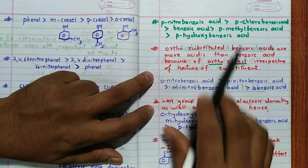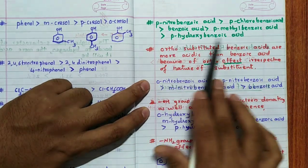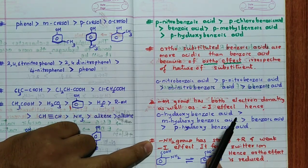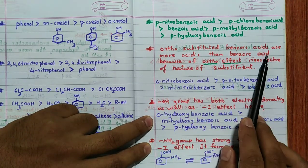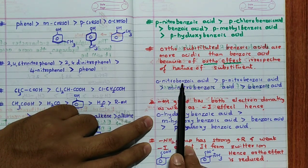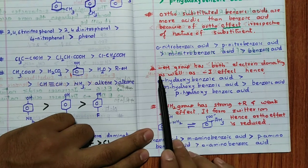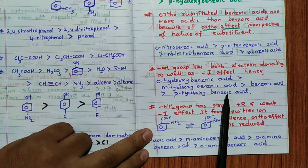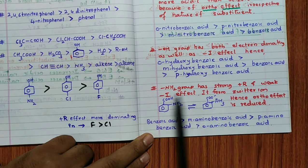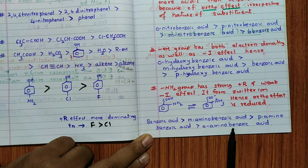For benzoic acid derivatives: para-nitrobenzoic acid > para-chlorobenzoic acid > benzoic acid > para-methylbenzoic acid > para-hydroxybenzoic acid. An important fact is the ortho effect: due to steric hindrance, ortho-substituted benzoic acids are more acidic than benzoic acid irrespective of the nature of the substituent. So ortho-nitrobenzoic acid > para-nitrobenzoic acid > meta-nitrobenzoic acid > benzoic acid. For the OH group (having both electron-donating +R and −I effects): ortho-hydroxybenzoic acid > meta-hydroxybenzoic acid > benzoic acid > para-hydroxybenzoic acid. For the NH₂ group (strong +R, weak −I, forms zwitterion reducing ortho effect): benzoic acid > meta-aminobenzoic acid > para-aminobenzoic acid > ortho-aminobenzoic acid.